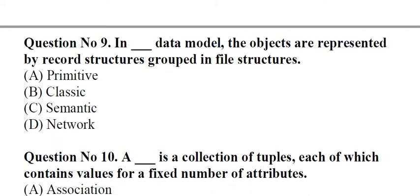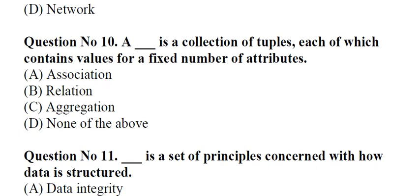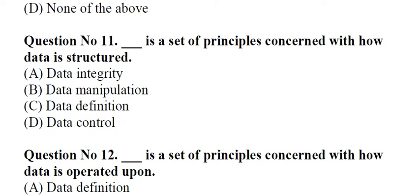Question number 9. In classic data model, the objects are represented by record structures grouped in file structures. Question number 10. A relation is a collection of tuples, each of which contains values for a fixed number of attributes. Question number 11. Data definition is a set of principles concerned with how data is structured. Question number 12. Data manipulation is a set of principles concerned with how data is operated upon.